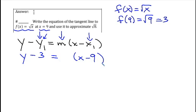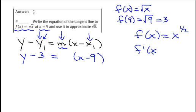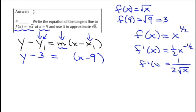So to find this slope, I need to find the derivative of the function so I can find the slope of the tangent line. So if the function is the square root of x, which we know is x to the 1 half, then the derivative, f prime of x, is 1 half x to the negative 1 half, which is the same thing as 1 over 2 square roots of x. So there's my derivative.